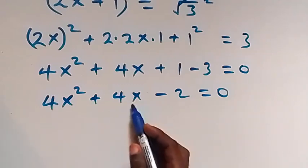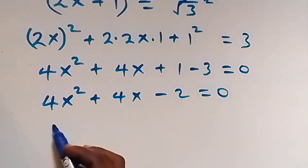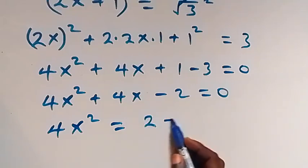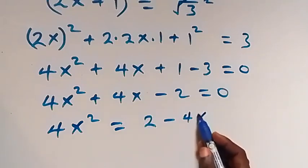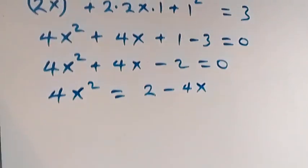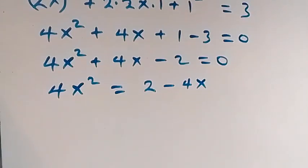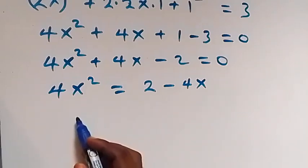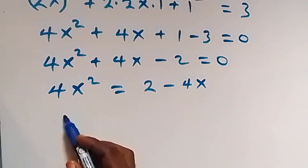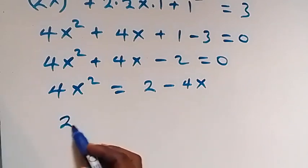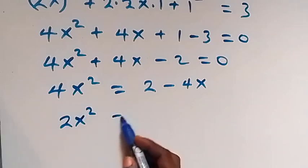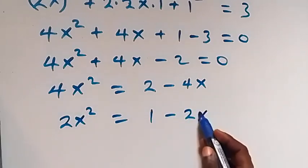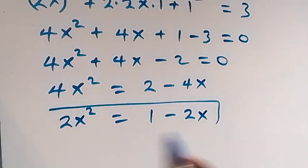From here this gives us 4x² plus 4x minus 2 equals 0. We can rearrange: 4x² equals 2 minus 4x. Dividing both sides by 2, we get 2x² equals 1 minus 2x.